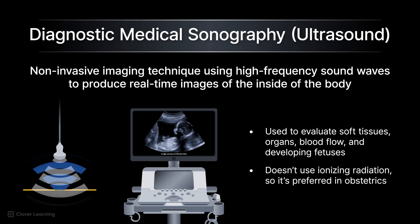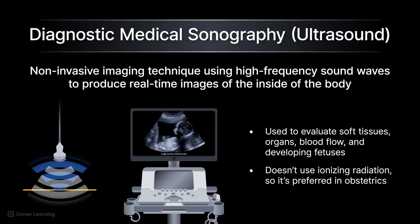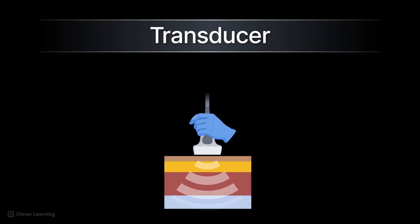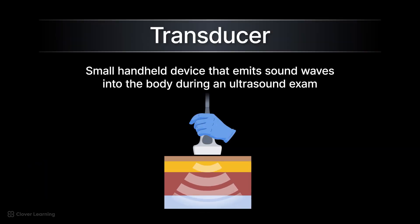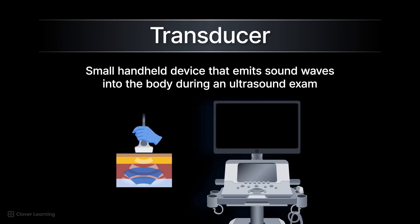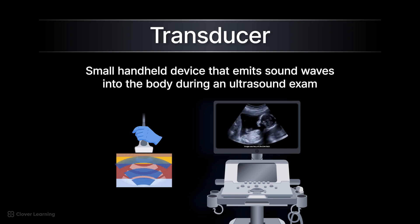Unlike radiography, sonography does not use ionizing radiation, so it is preferred in obstetrics. During an ultrasound exam, a small handheld device called a transducer emits sound waves into the body. These waves bounce off internal structures and return to the transducer, where they are processed by a computer to create visual images.